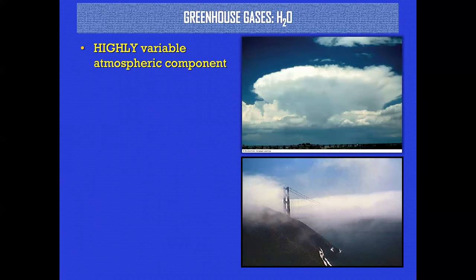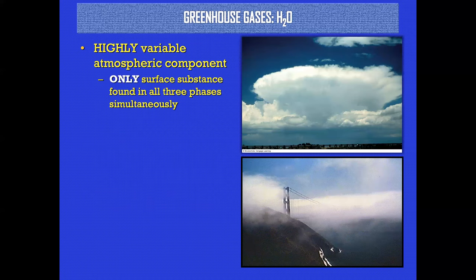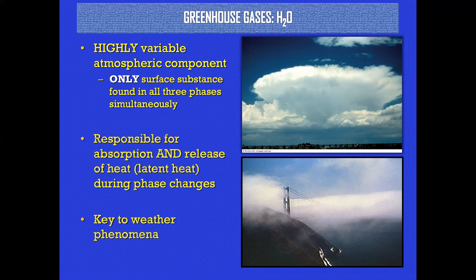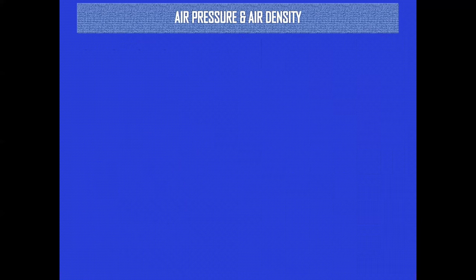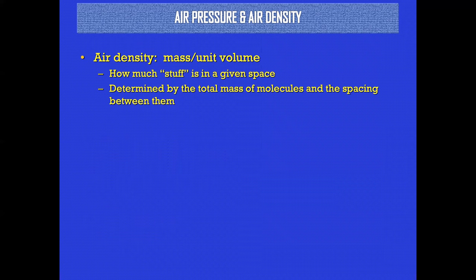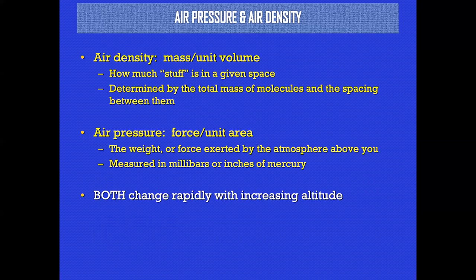Water vapor is highly variable — it's the only substance that can be found in all three phases on Earth. It's responsible for the absorption and release of heat, which we called latent heat, and it's obviously key to weather — tropical storms, winter nor'easters, and that kind of thing. Air pressure and density: air density is mass over unit volume — how much stuff is in a given space. Air pressure is force per unit area — basically the weight of the atmosphere above you — and both change very rapidly with increasing altitude.